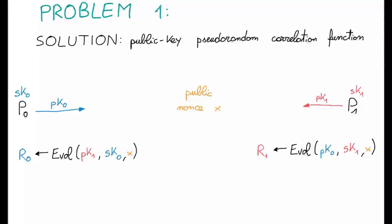With the help of public nonces, they can evaluate the public keys along with the secret counterparts, obtaining their own part of the correlated randomness. In our paper, we present an efficient solution that works for OT and Vector-OLE correlation.